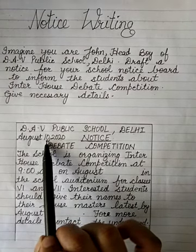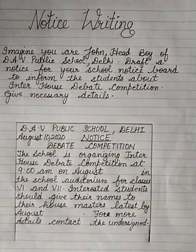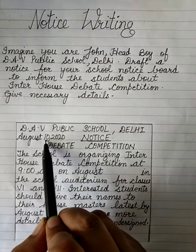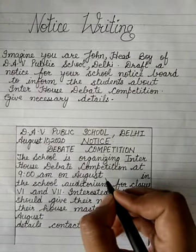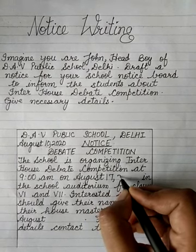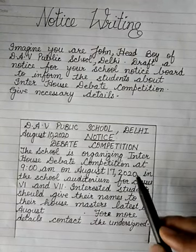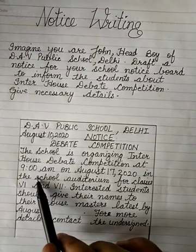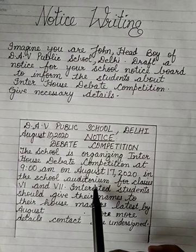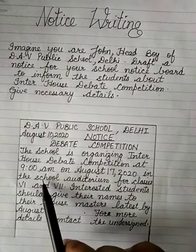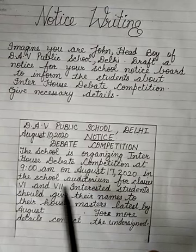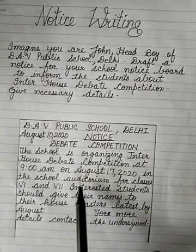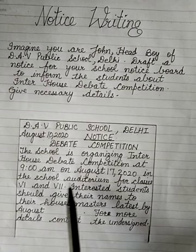You have to give some time for students to prepare and submit names — about 7 to 8 days. Today is August 10, so you can give the date as August 17, 2020. Then write the place: 'in the school auditorium.' You can also write school assembly area or AV room — I have written auditorium here.